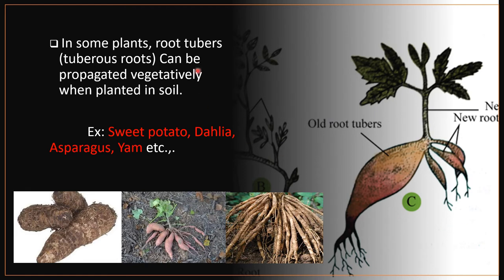In other plants, root tubers or tuberous roots can be propagated vegetatively when planted in soil. Best examples are sweet potato, dahlia, asparagus, and yam. The first picture is about yam, the second picture represents sweet potato, the third picture represents asparagus, and the fourth one is dahlia.